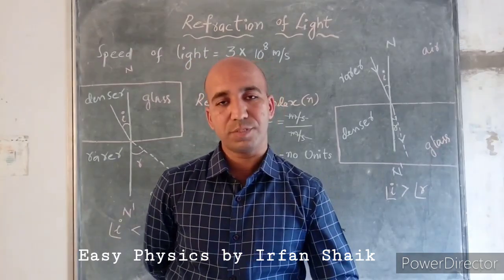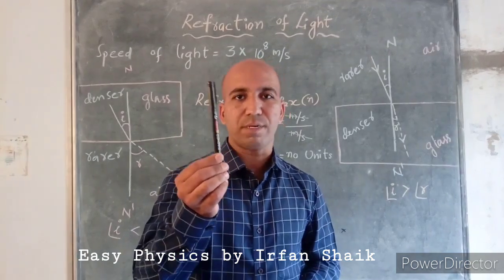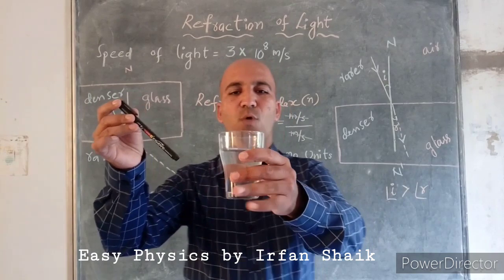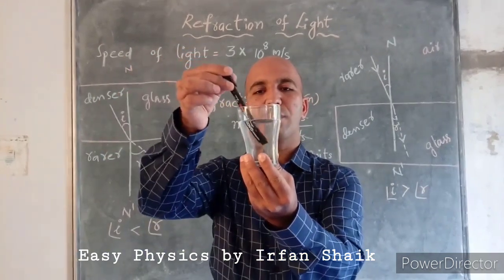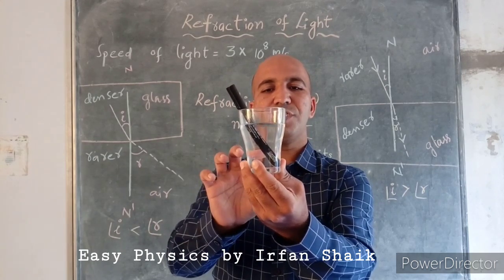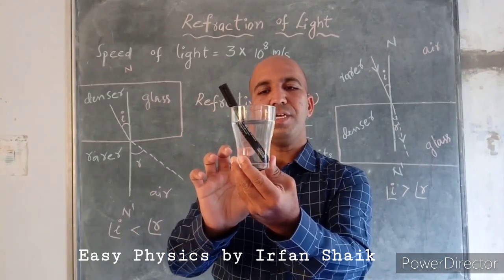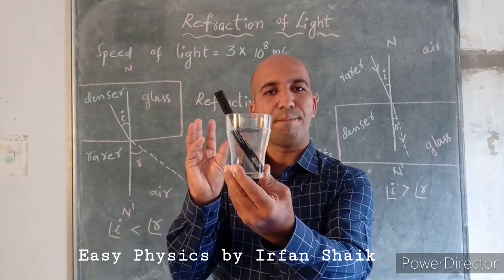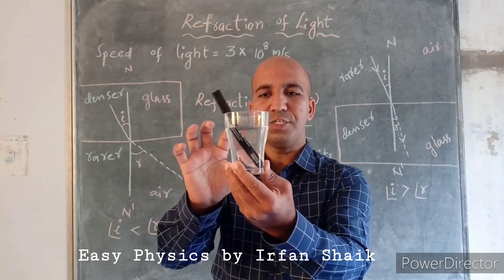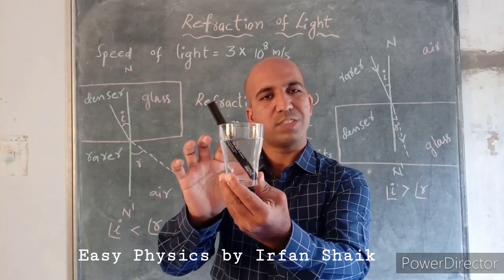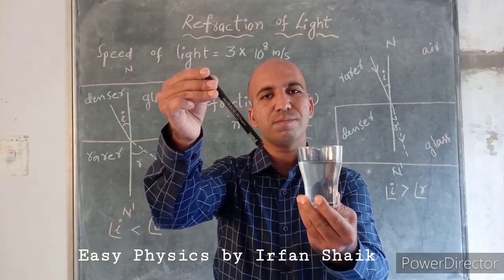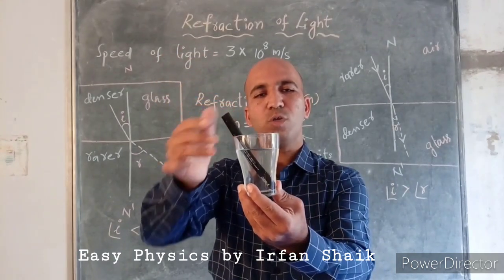Let us understand this with some examples. Here I have a pen, and now I am going to put this pen into this glass of water. Observe carefully. You can observe the difference in the pen which is inside the water and which is outside the water. The part of the pen inside the water looks bigger than its original size, and at the interface — where water and air meet — the pen looks like it has bent.